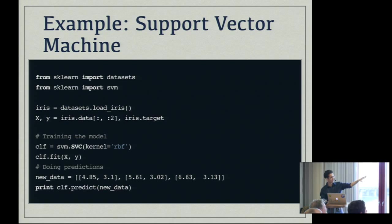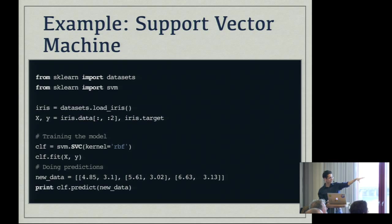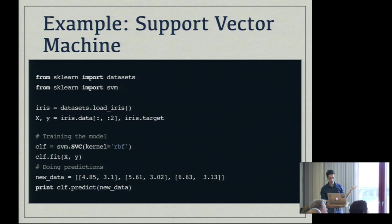This is the code — really simple, just a couple of lines. You instantiate SVC, which is a support vector machine from the SVM module with an RBF kernel. Kernels depend on the type of data you're dealing with; some will be more performant than others. scikit-learn actually gives you tools to automatically choose the right kernel — it will try all of them and give you the best one. Then you're doing predictions.